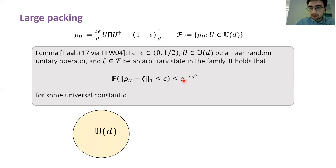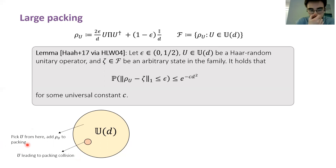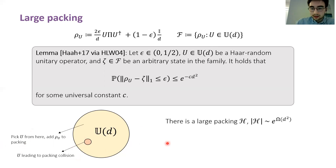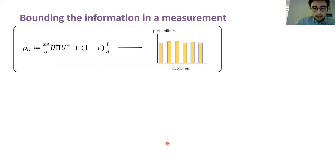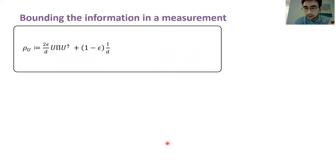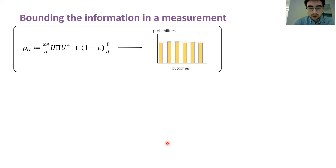The lemma says that the probability of picking a state uniformly at random from this family that is epsilon-close in trace distance to some fixed state in that family is exponentially small in d-squared. This allows us to perform a probabilistic existence argument: we consider the set of all unitary operators, and since only a very small subset leads to a packing collision, we pick states outside that small bad subset. This implies that there exists a large packing with cardinality at least exponential in d-squared, giving us our lower bound on the mutual information.